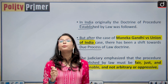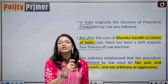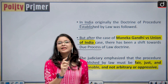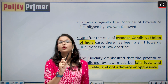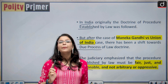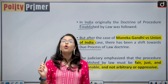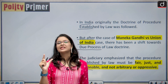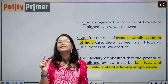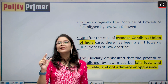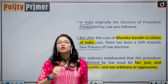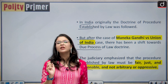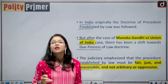This is a major difference: in due process of law, both the intention of Parliament and the executive are examined. But in procedure established by law, only the intention of the executive is seen — only whether the procedure is strictly followed. This constitutes a major difference between both doctrines.